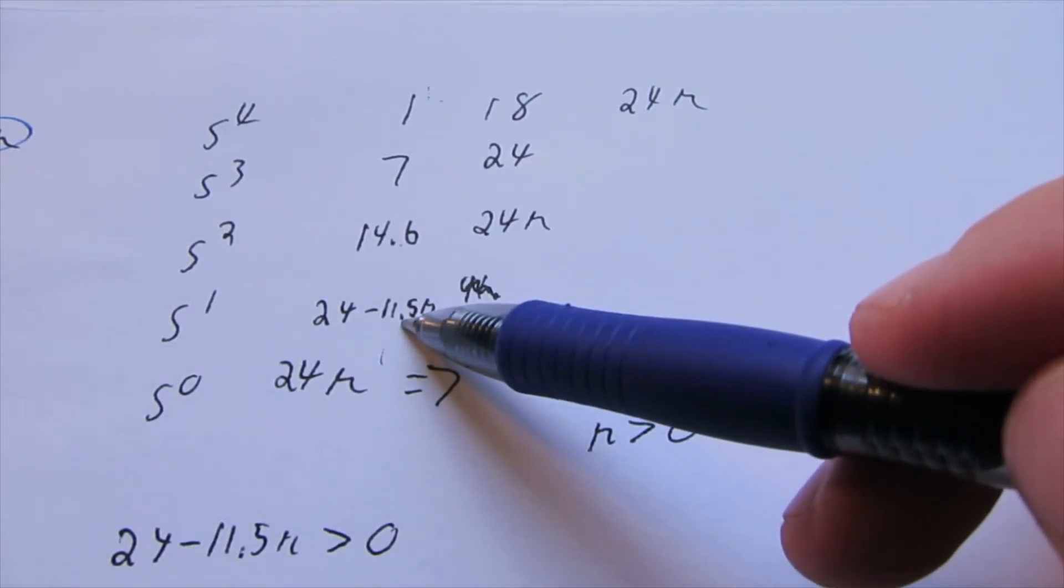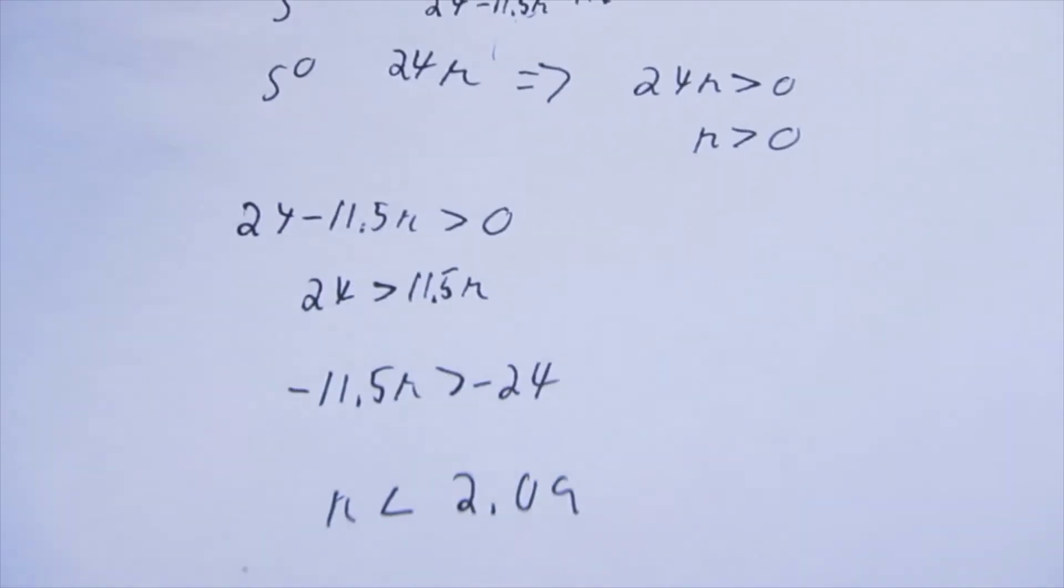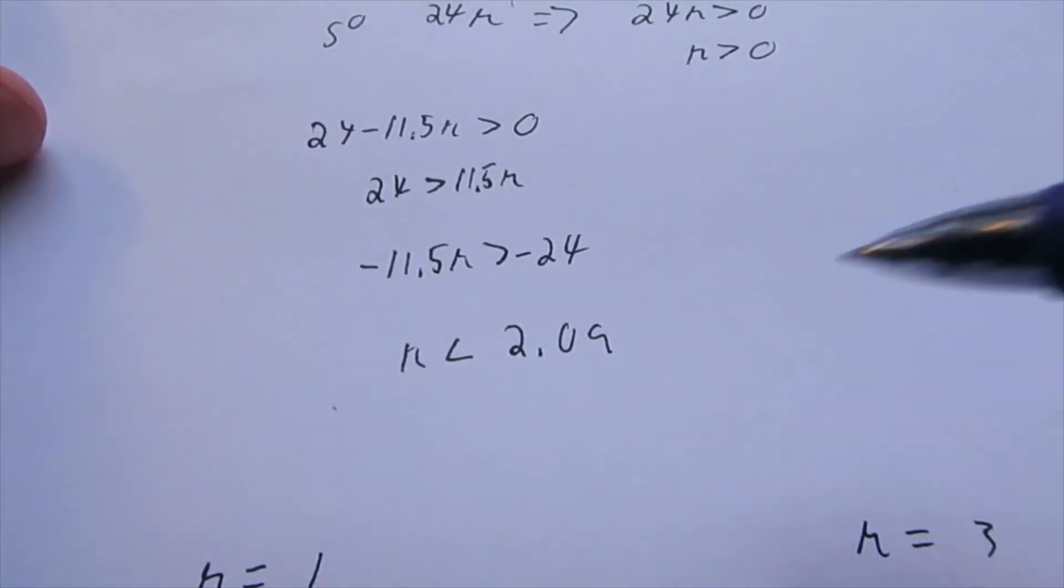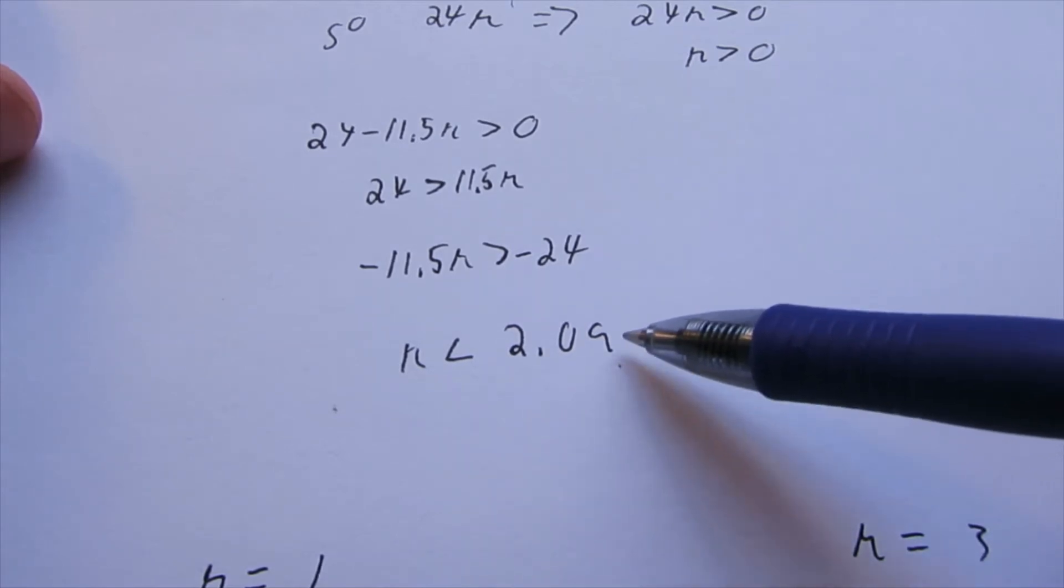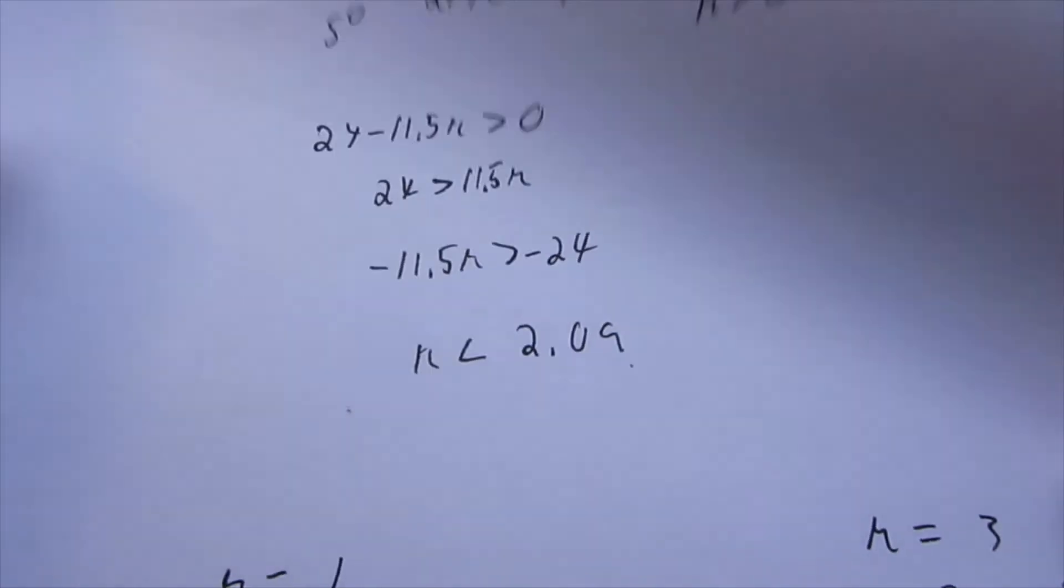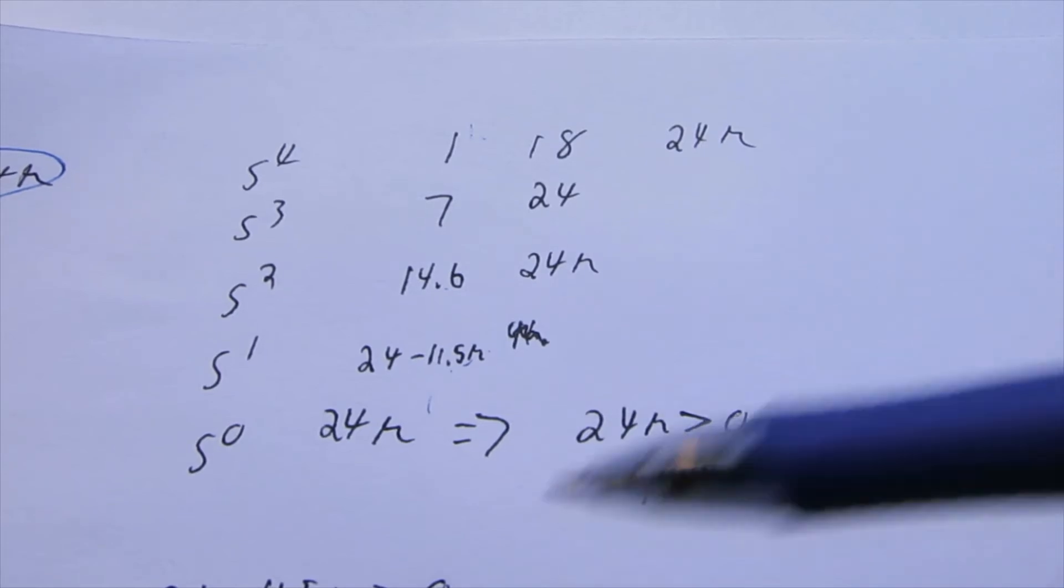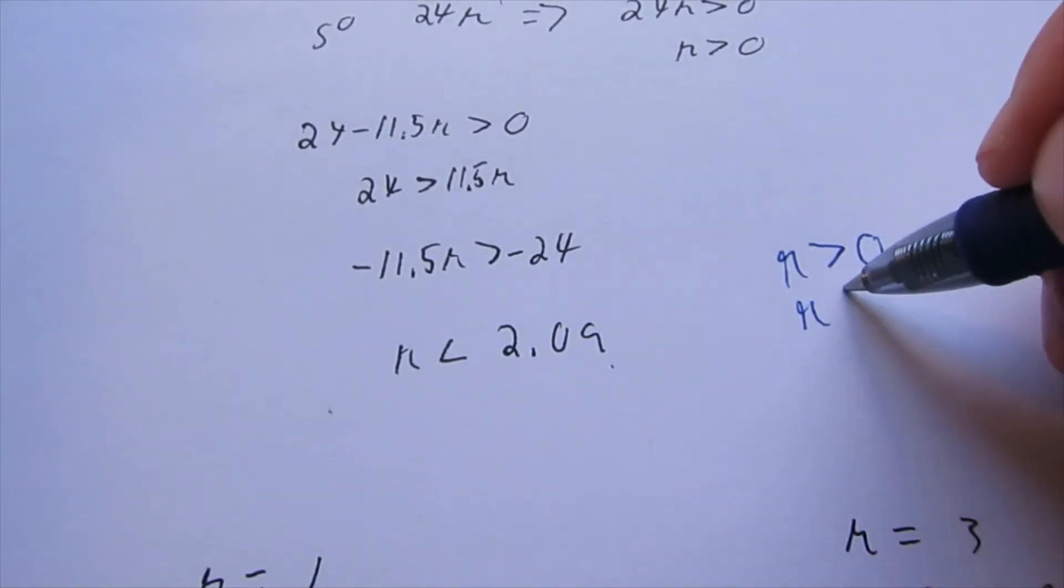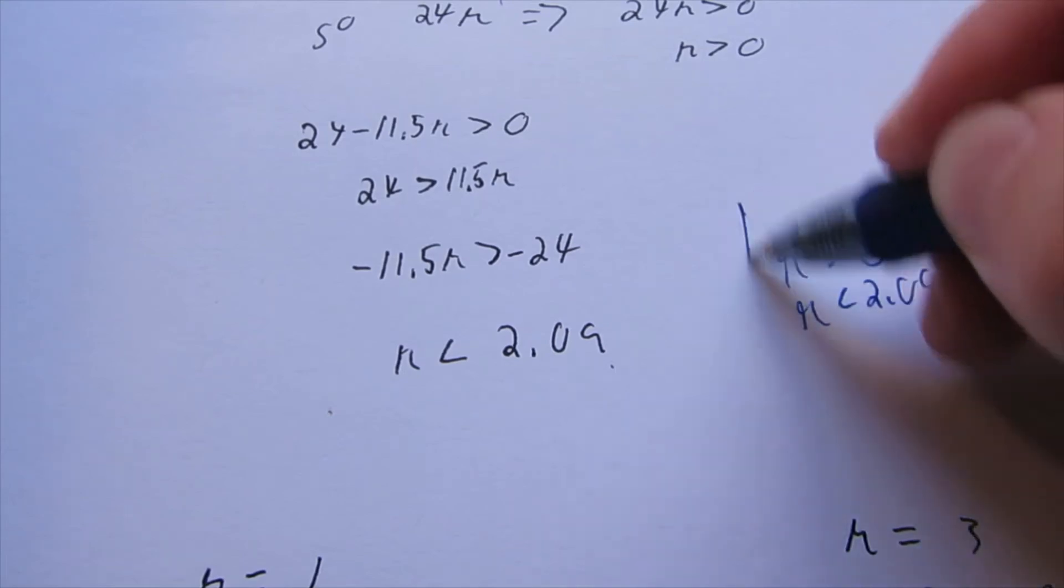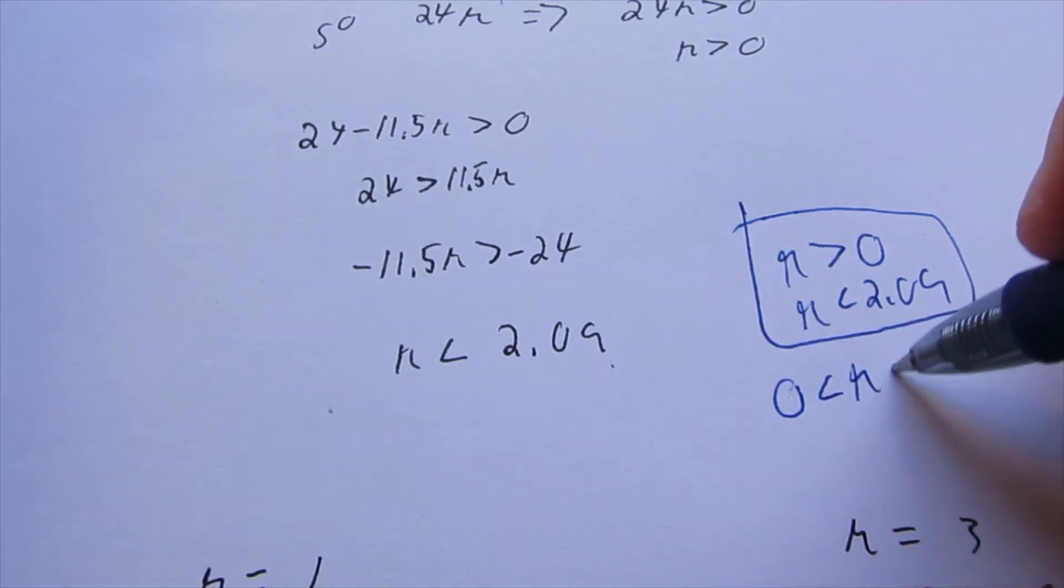But now, let's look at this other criteria here. 24 minus 11.5K. That also needs to be greater than 0. And then if you do the math on that, K needs to be less than 2.09. So, if K is greater than 2.09, you can obviously see that if you plug a K greater than here, that goes to negative. The system is unstable. So, ultimately, K needs to be greater than 0, and then K needs to be less than 2.09. So we need to solve both of those criteria. You can write this as 0 less than K less than 2.09.